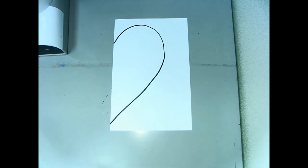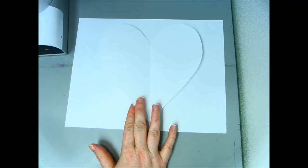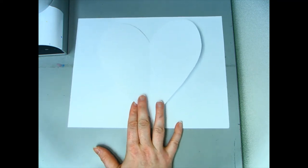Our next step is to cut out the heart and get ready to paint. It's a little hard to see, but I have my heart on another white piece of paper. That way, my tabletop doesn't get messy.